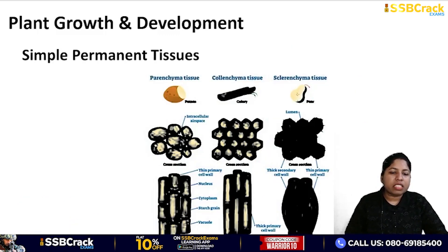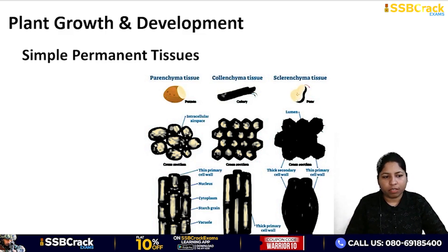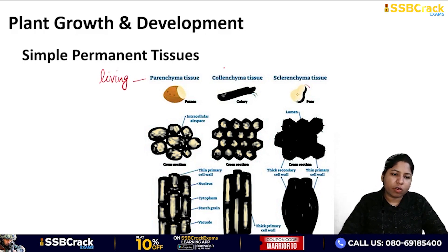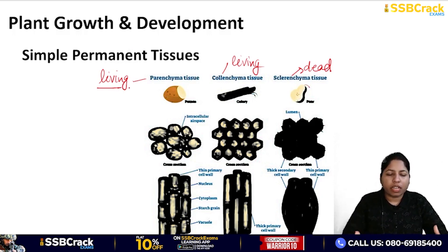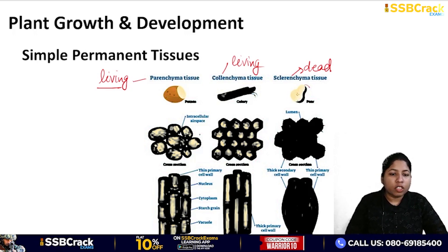Now let's discuss simple permanent tissues: parenchyma, colenchyma, and sclerenchyma. The diagrams show how the cells look. Parenchyma are living cells with a thin cell wall. Colenchyma are also living cells. Sclerenchyma are dead cells. In biology, structure and function are the two most important things to focus on. For parenchyma, the cell wall is thin, and its function is storage.